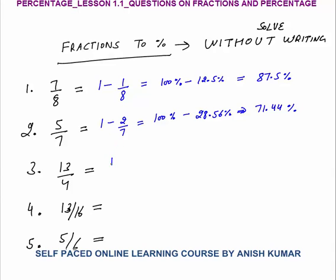13 by 4: we can break this as 12 plus 1 by 4, which simplifies to 3 plus 1/4. You will learn how to break fractions just by practice. Now to convert any number to percentage, multiply by 100: 3 means 300%, and 1/4 is 25%. So the answer is 325%.